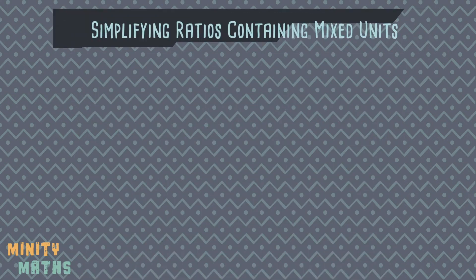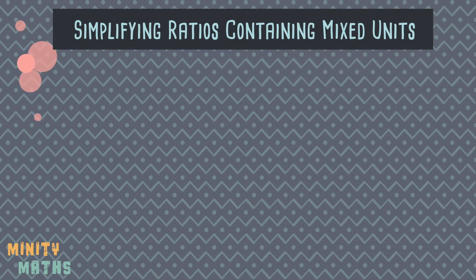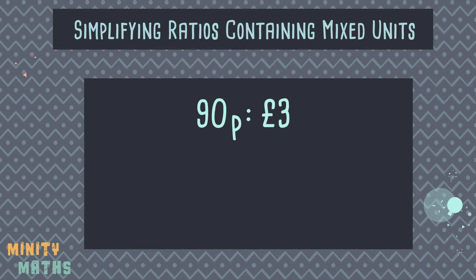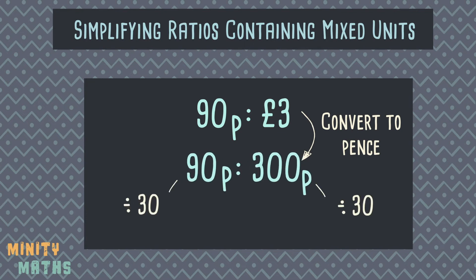How about if the ratio contains mixed units such as pounds and pence? Firstly, choose the smallest unit, in this case pence, and then convert the other number to this smallest unit. Now we can simplify the ratio as we usually would. Then we should remove the units as ratios are not written with units.